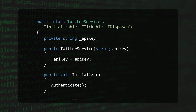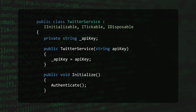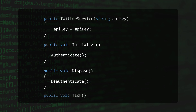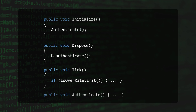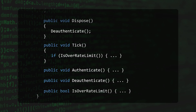So now we can modify our Twitter API service to implement IInitializable, ITickable, and IDisposable. We'll authenticate in Initialize, deauthenticate in Dispose, and use Tick to periodically check our rate limits.